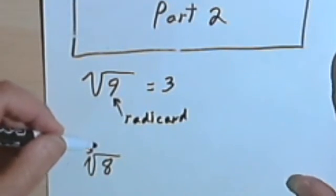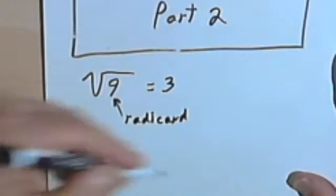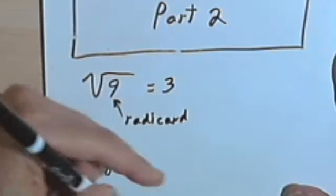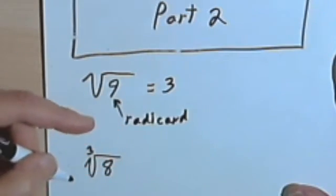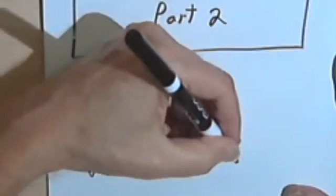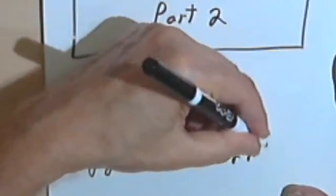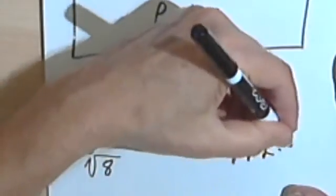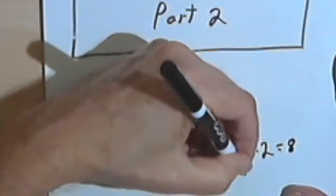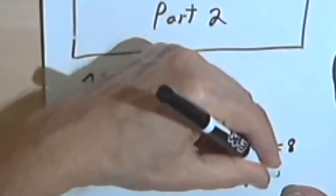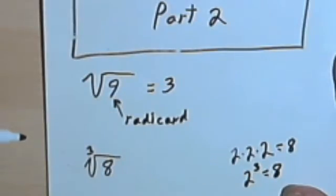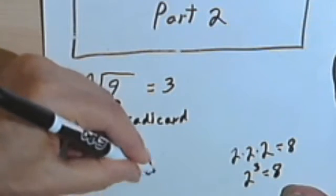So thinking through what could we multiply by itself, in other words, something times something times something, to get an 8, well, the answer would be a 2, because 2 times 2 times 2 equals 8. Or we could just say 2 to the third power is 8. So the answer to this is 2.